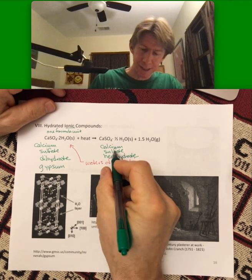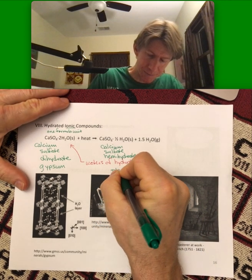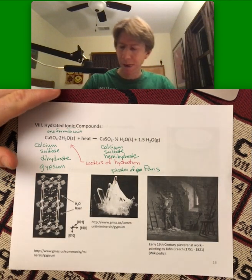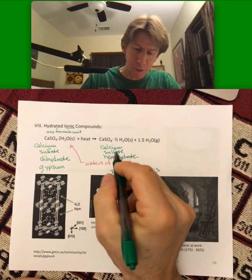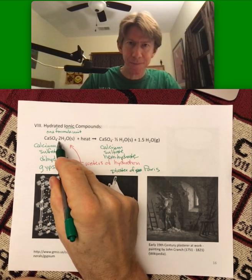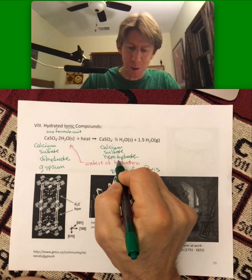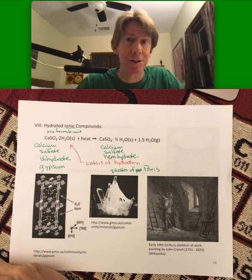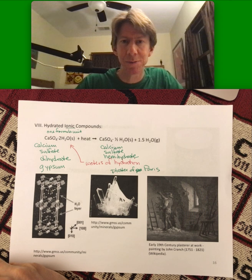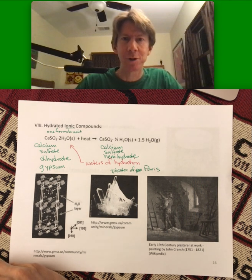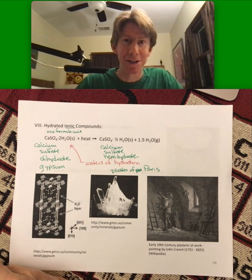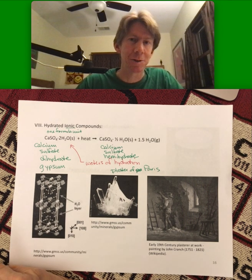This is called Plaster of Paris. What you do is you mine it, you heat it up, and then you buy Plaster of Paris. At least in the 19th century — and also in my house, which was made in the mid-20th century — you add a little bit of water back in, and it forms a solid material called plaster that you can then plaster, as a verb, on walls to make walls.